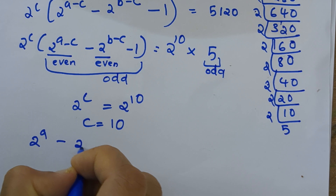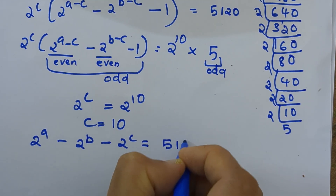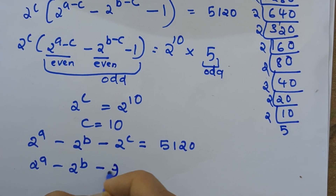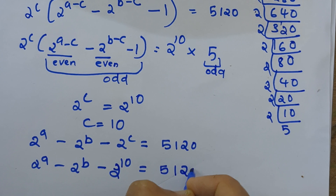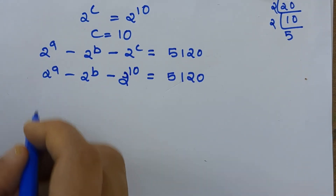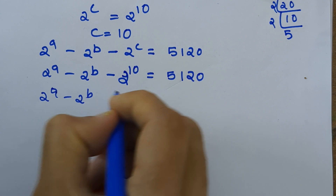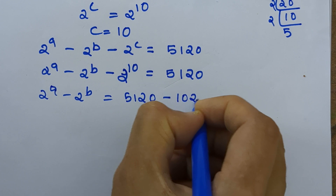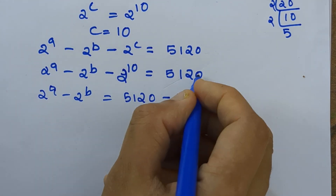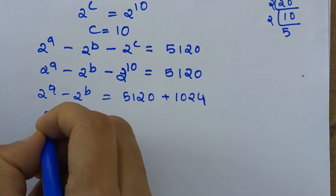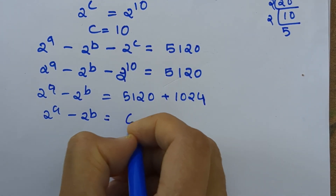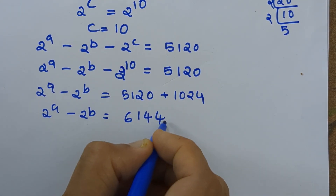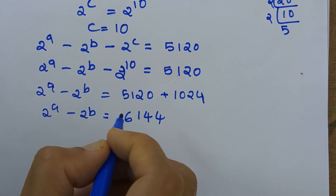Our equation was 2 raised to a minus 2 raised to b minus 2 raised to c equals 5120. With c equal to 10, that is 2 raised to a minus 2 raised to b minus 2 raised to 10 equals 5120, so 2 raised to a minus 2 raised to b equals 5120 plus 2 raised to 10, which is 1024, giving us 6144.